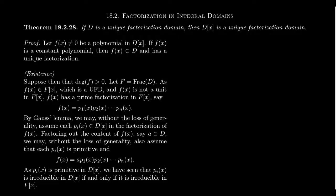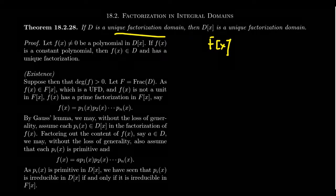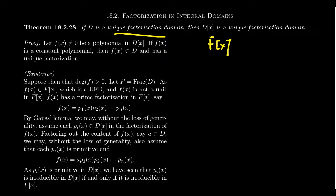We've been interested in factorizations of polynomials in integral domains — UFDs are the places to be. We learned from Gauss's lemma that factorizations of polynomials over a UFD coincide with factorizations over the field of fractions. Since the field of fractions is necessarily a field, F adjoin X is a Euclidean domain and in particular a unique factorization domain, and so we can push that back onto D. This result is really a consequence of Gauss's lemma.